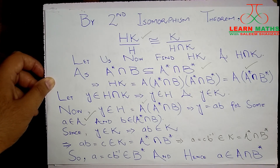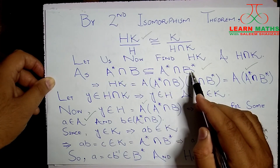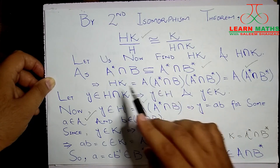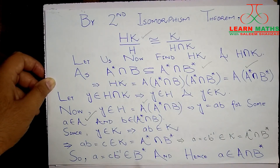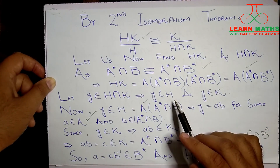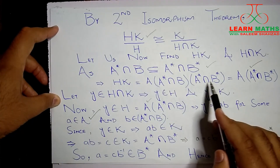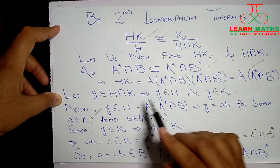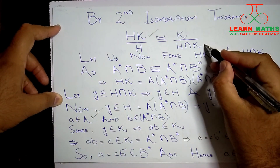We start by finding HK. Since (A* ∩ B) is a subset of (A* ∩ B*), HK = A·(A* ∩ B)·(A* ∩ B*). Because A is a subset of A* and B is a subset of B*, this intersection is a subset of A* ∩ B*. Their product gives us A·(A* ∩ B*) = A*(∩ B*) again. So HK = A·(A* ∩ B*), which is A times K.